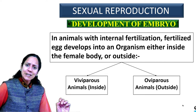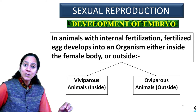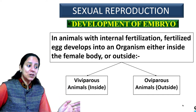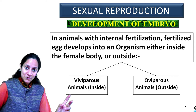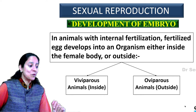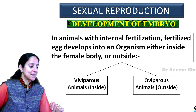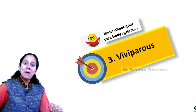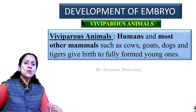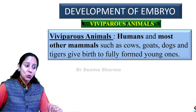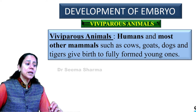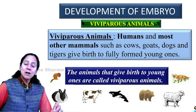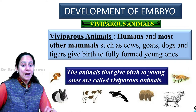In animals with internal fertilization, the fertilized egg develops into an embryo, and that embryo develops into an organism either inside or outside the female body. On that basis, we learn two terms: viviparous and oviparous. Viviparous animals — human beings and most other mammals such as cow, goat, dog, and tiger — give birth to fully formed young ones. Animals that give birth to young ones are called viviparous animals.